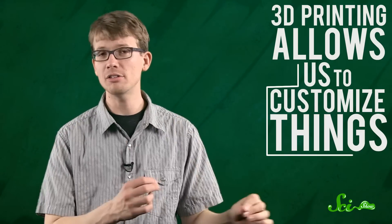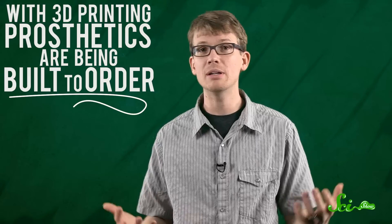For starters, 3D printing allows us to customize things that used to be only manufactured in bulk. For example, prosthetic limbs used to be made en masse, and they were basically all the same. There was small, medium, and large, and left and right limbs, but each one had to be customized to a patient after they were made. With 3D printing, prosthetics are being built to order with each individual patient specifications.